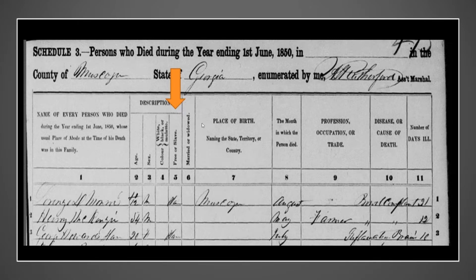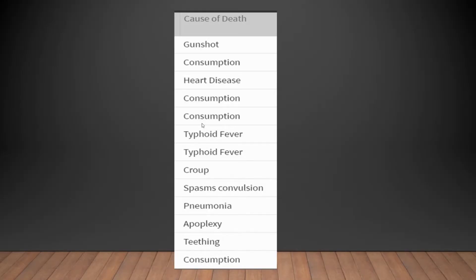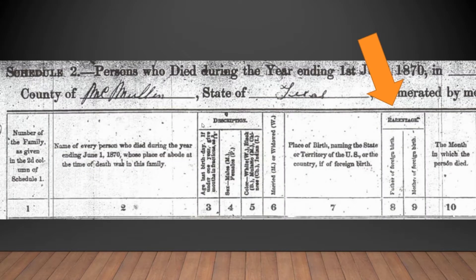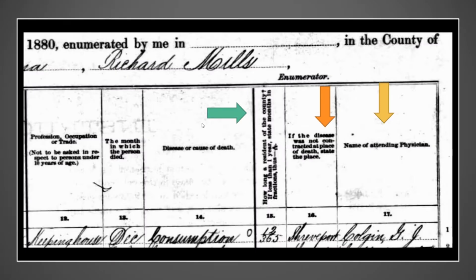Third, sometimes a cause of death can provide insight into genetic diseases that may be inherited. Obituaries from that time can offer more information if a person was killed in an accident or was a victim of a crime. You might discover that a deceased ancestor had a foreign-born mother or father in the 1870 schedule — under parentage, there was a place for the enumerator to mark whether the deceased's father or mother were of foreign birth. The 1880 schedule asks how long the deceased person had been in the county, where they had contracted the disease if any, and the name of any attending physician.